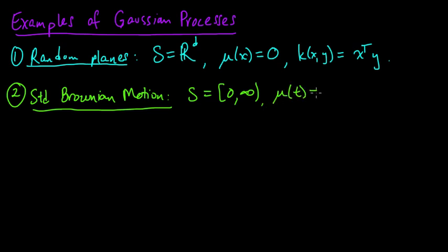I'm going to use T now instead of X, because we often think of it as time. And the covariance function is the min of S and T. Seems a bit strange. The min of S and T. And yet, you can prove that, in fact, this is a, well,